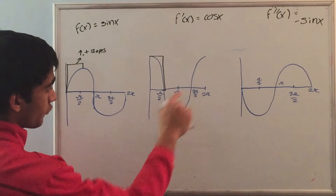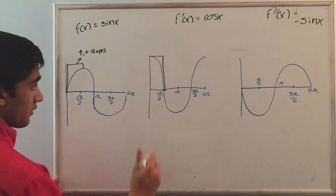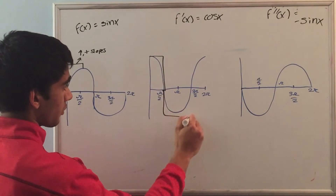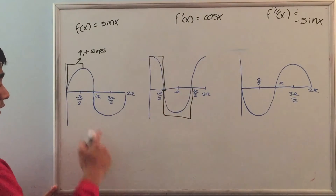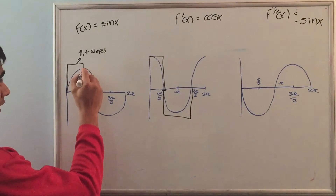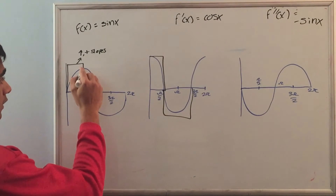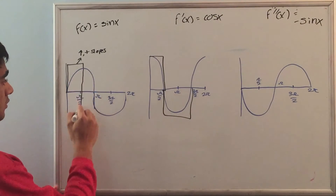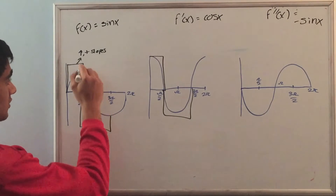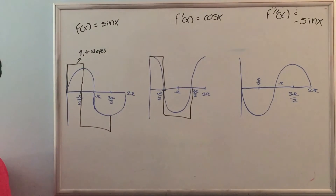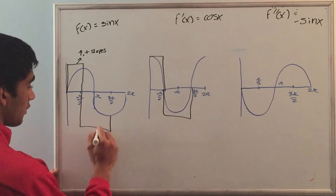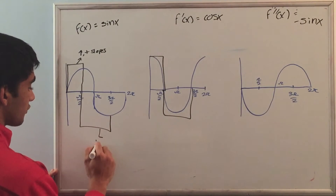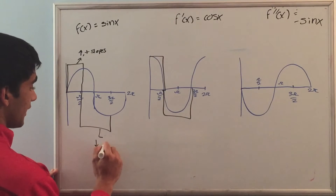From pi over 2 to 3 pi over 2, the derivative is negative. If we look at slopes from pi over 2 to 3 pi over 2, notice that they're all negative and the function is decreasing the entire way from pi over 2 to 3 pi over 2. So in this part, we can say it is decreasing and it has negative slopes.